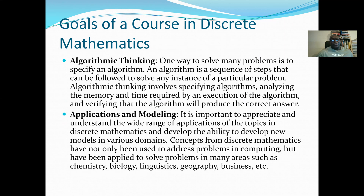The next goal is algorithmic thinking. One way to solve many problems is to specify an algorithm, especially in computer science. Before we solve a problem, we design the algorithm. An algorithm is a sequence of steps that can be followed to solve any instance of a particular problem. The key word is 'sequence of steps' — you must do the first step before moving to the second.